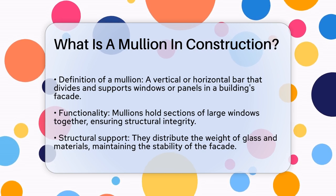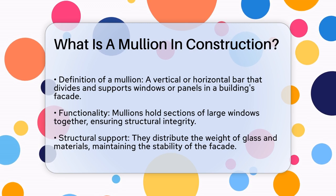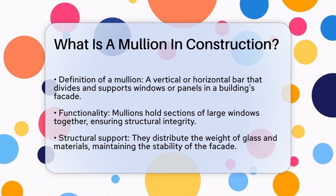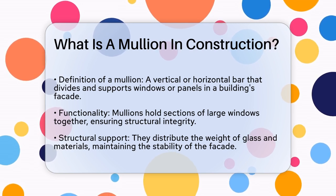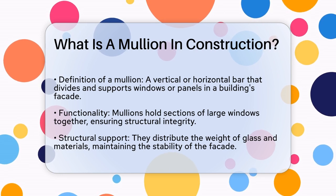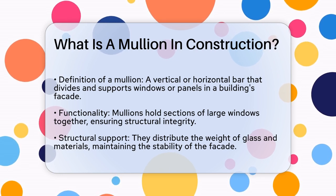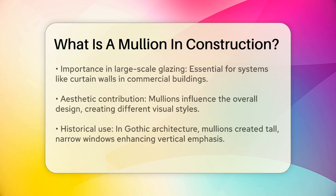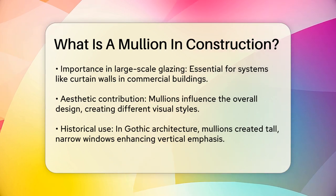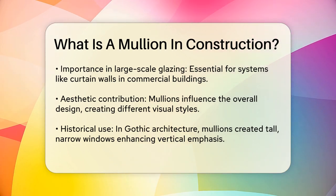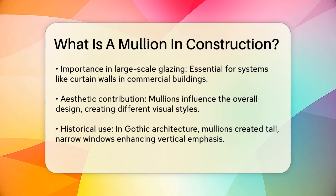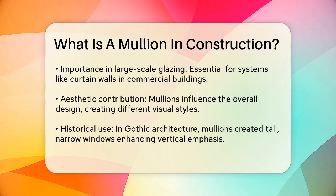Mullions serve both structural and aesthetic purposes. Structurally, they provide the necessary support to ensure the stability of the window system. They help distribute the weight of the glass and other materials, making sure the facade of the building remains intact. This is particularly important in large-scale glazing systems like curtain walls in commercial buildings.